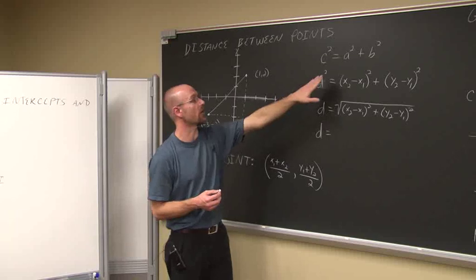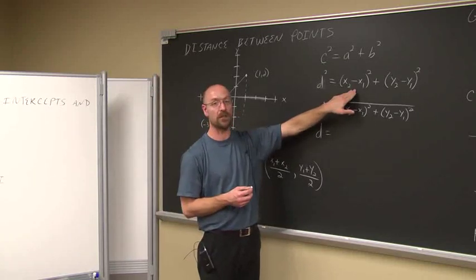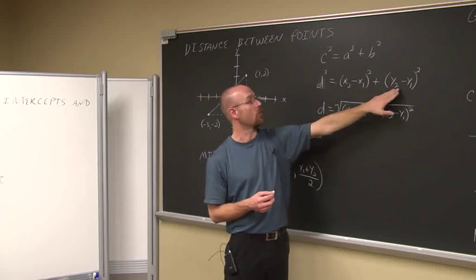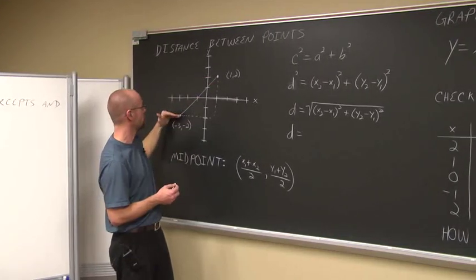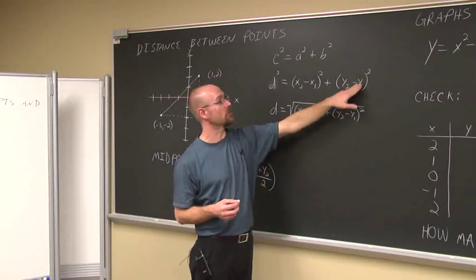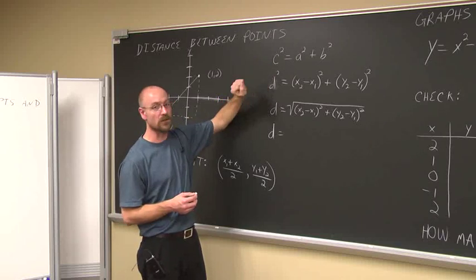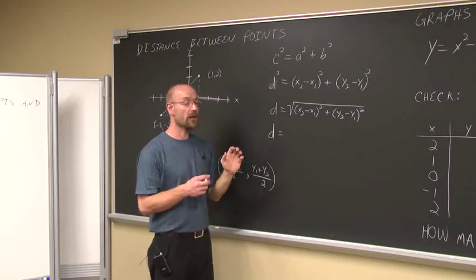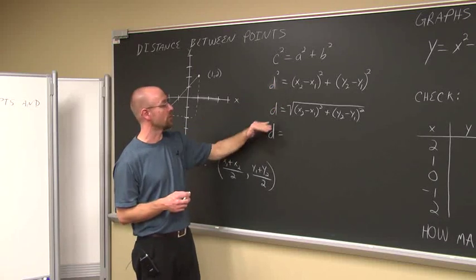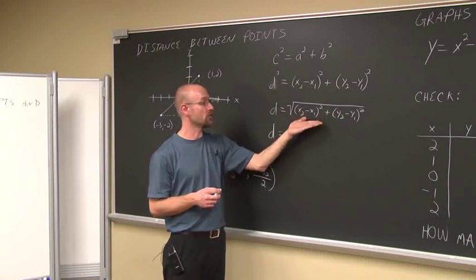This can be described using the Pythagorean theorem: c² = a² + b². Our 'a' is our horizontal change from one point to the other, described as the change in x: (x₂ - x₁)². Our 'b' is the change in y: (y₂ - y₁)². Since distances are always positive and we're squaring the values, we take the square root of both sides: d = √[(x₂ - x₁)² + (y₂ - y₁)²]. This is the distance formula.